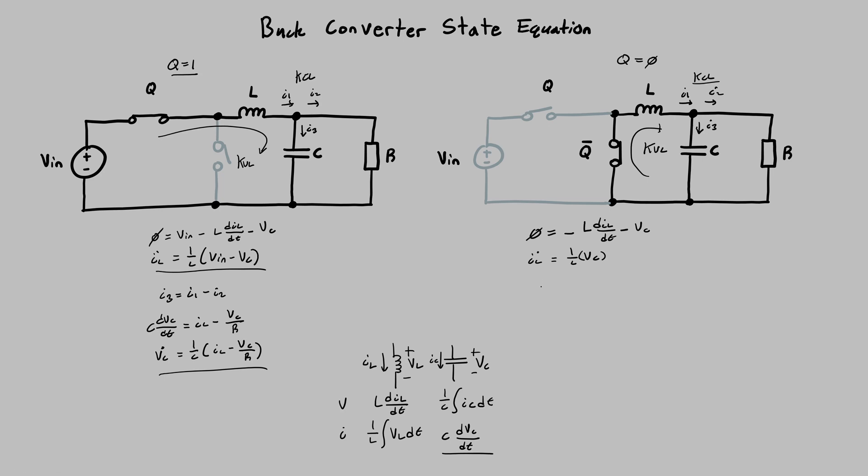And then solving the KCL node, you have I3 equals I1 minus I2 again. And I3 is C dVC/dt. And I1 is going to be the same current through the inductor, which is the same orientation as the previous circuit. And I2 is going to be the same voltage across capacitor over the resistor. So you end up with VC dot, same equation. So that's the second set of state equations done.